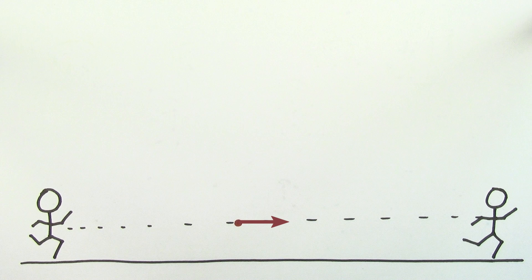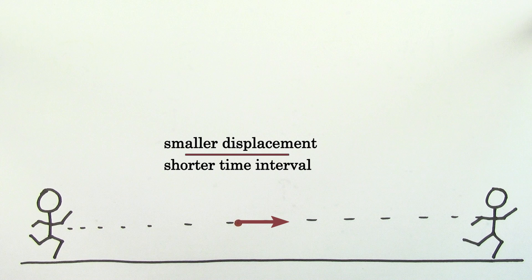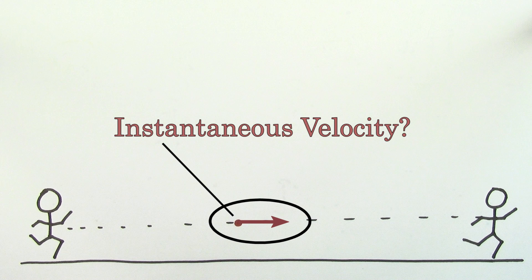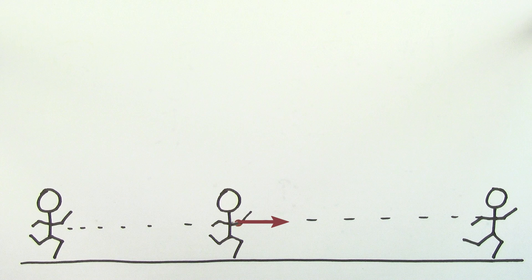In order to better zero in on the instantaneous velocity, we could choose an even smaller displacement over that even shorter time interval. But we're going to run into a problem here, because if you want to find a perfect value for the instantaneous velocity, you'd have to take an infinitesimally small displacement divided by an infinitesimally small time interval. But that's basically zero divided by zero, and for a long time, no one could make any sense of this.